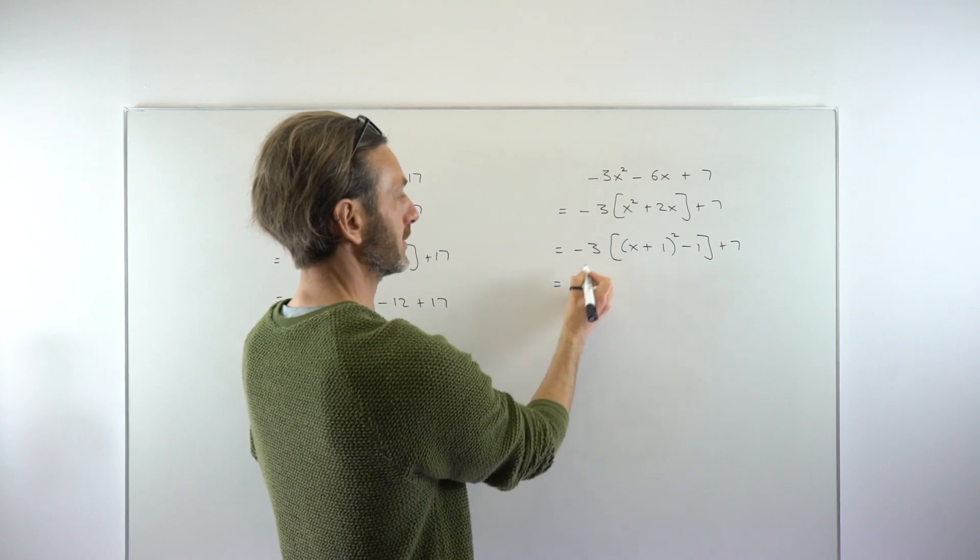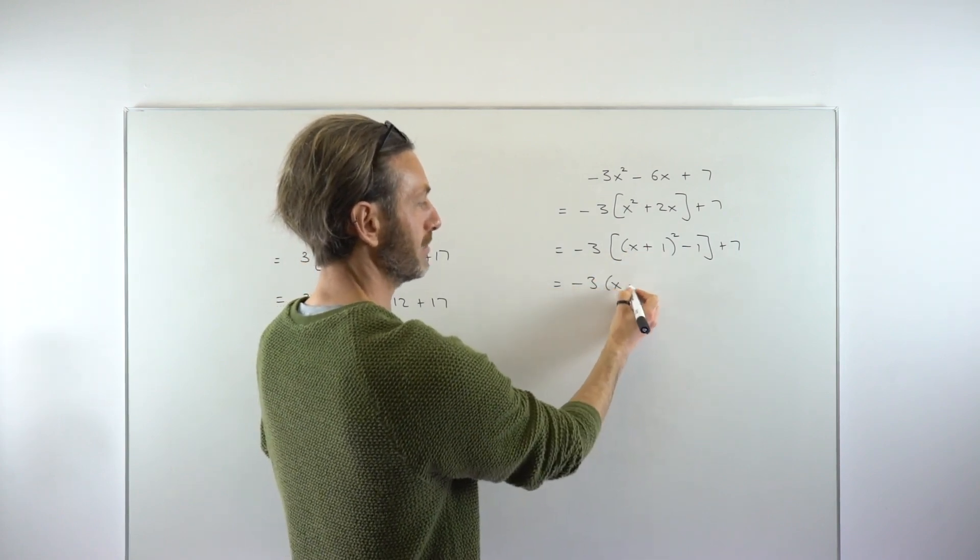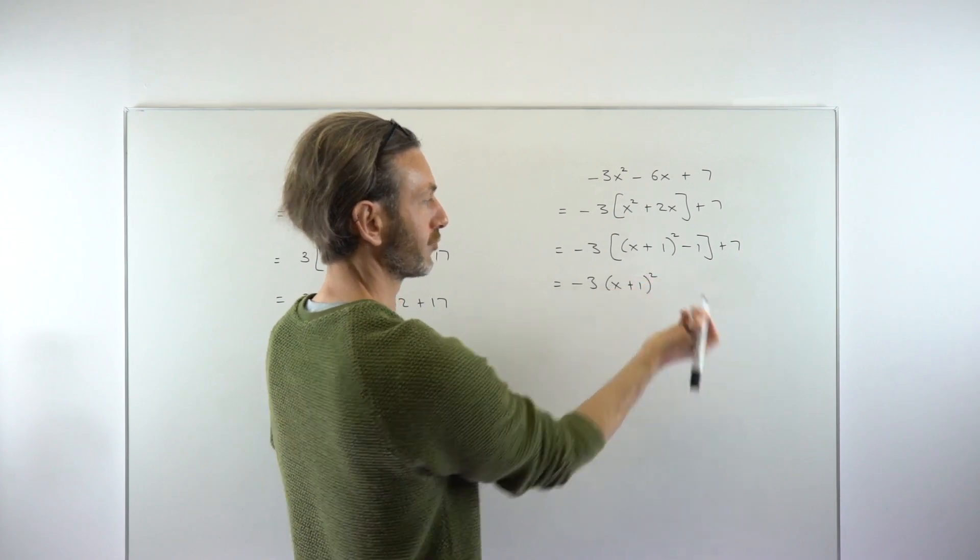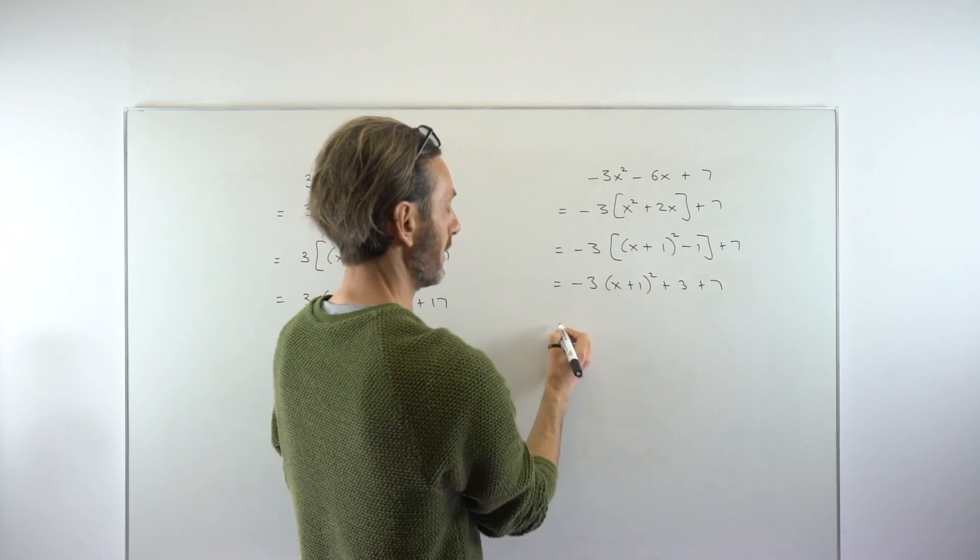Multiplying into the square bracket: minus 3 times the round bracket. Again, you can't multiply into that round bracket, so just write it like this. Minus 3 times minus 1 is plus 3, keep the plus 7 on the end.